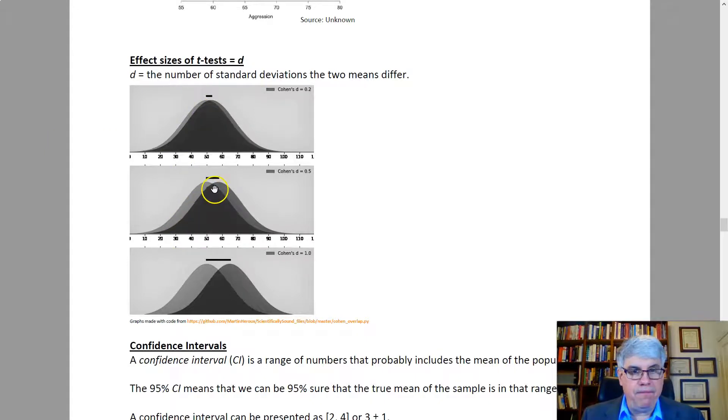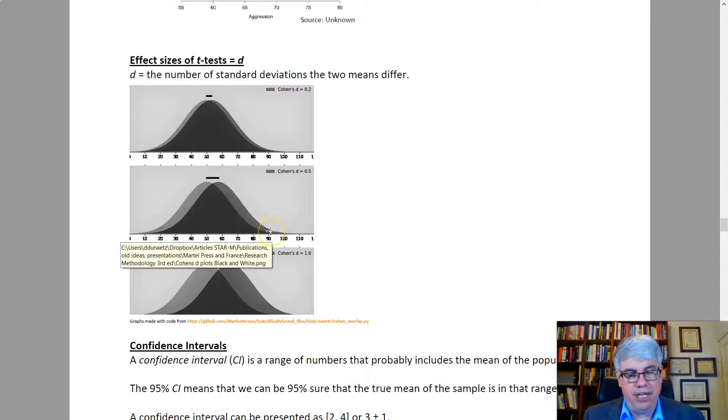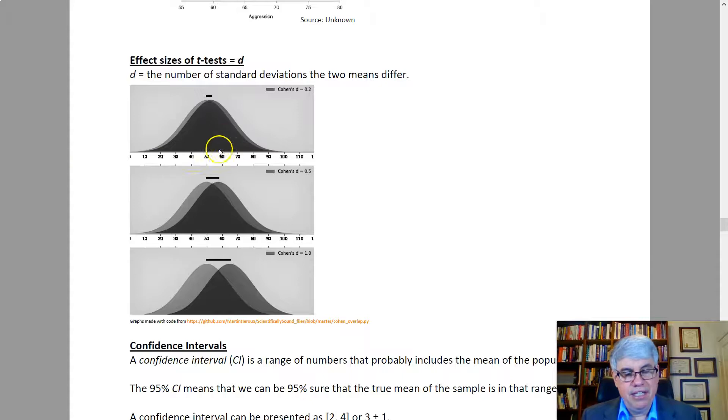However, if the d is 0.5, we can see, look at all these dark gray managers who have moved into this area now. This training has worked pretty good. Over here, there's only a few dark gray people that moved into the above average category.